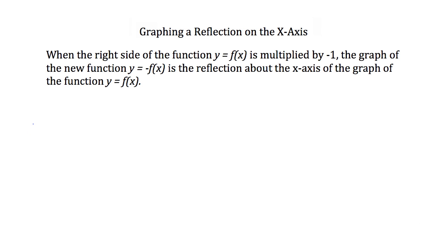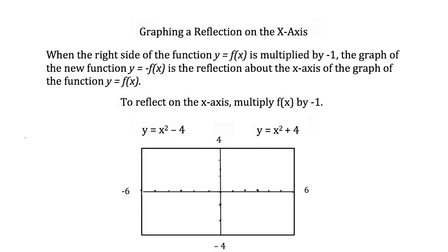The next important concept regards graphing a reflection on the x-axis. When the right side of the function y equals f of x is multiplied by negative 1, the graph of the new function y equals negative f of x is the reflection about the x-axis of the graph of y equals f of x. We have y equals x squared minus 4, and when we multiply by negative 1, we get y equals negative x squared plus 4. The resulting graph is identical except it is reflected about the x-axis — as if we folded the graph along the x-axis to get the exact same graph reflected.